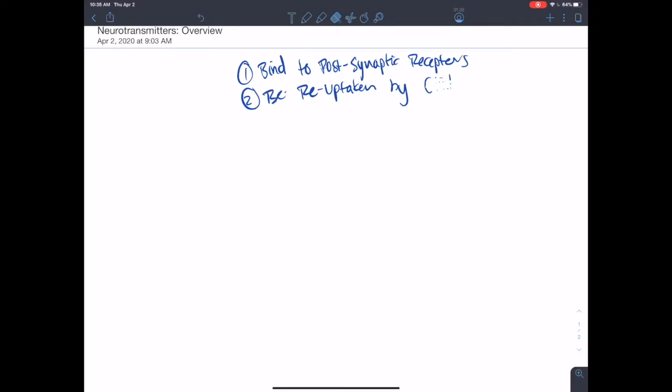They can be reuptaken by glial cells. I should be more specific here, reuptaken by astrocytes, or even in some cases, the presynaptic neuron itself, or they can be degraded.